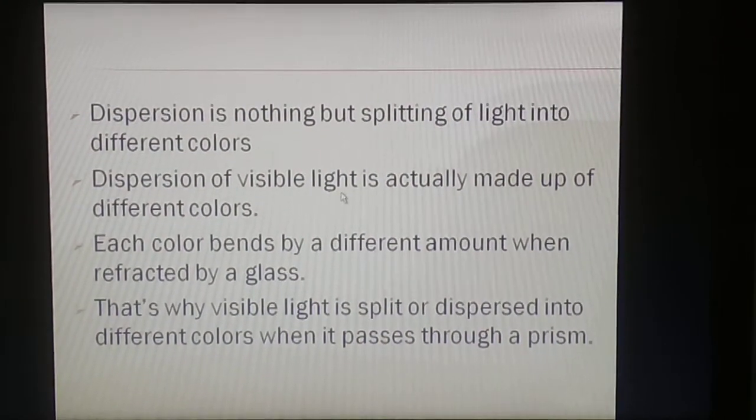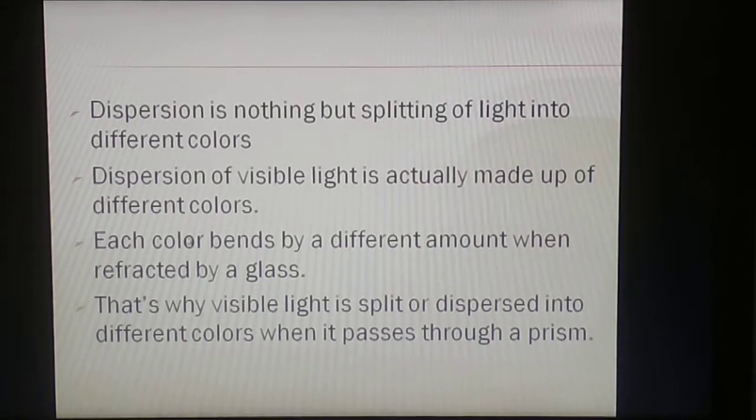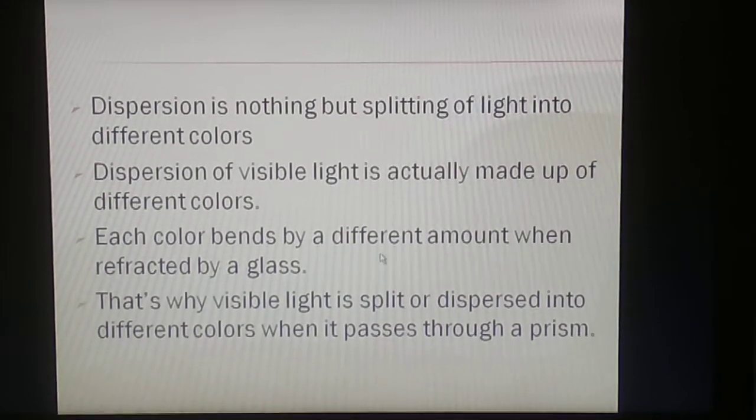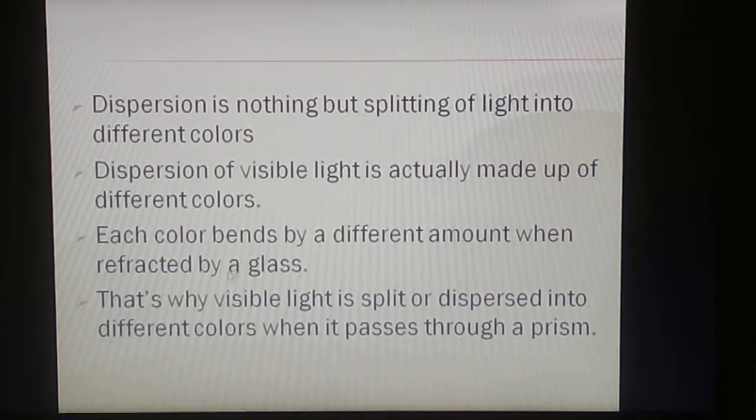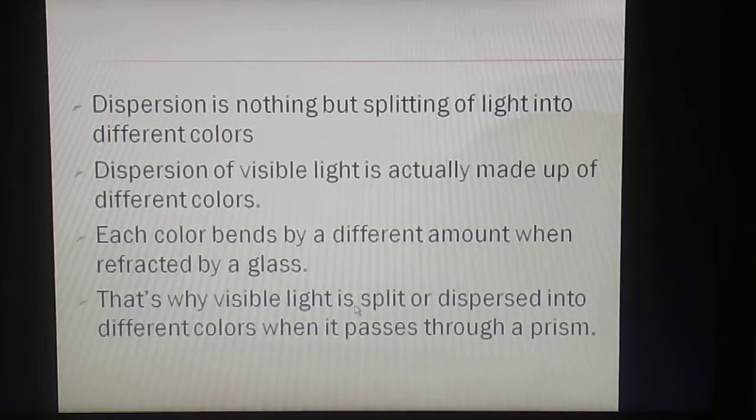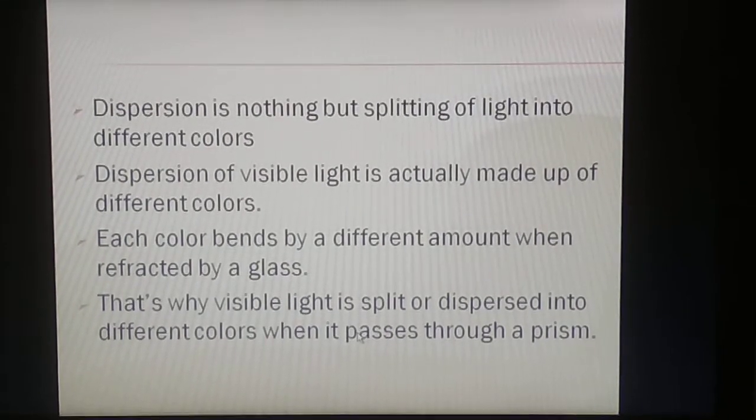Dispersion of visible light is actually made up of different colors. Each color bends by a different amount when refracted by a glass. That's why visible light is split or dispersed into different colors when it passes through a prism.